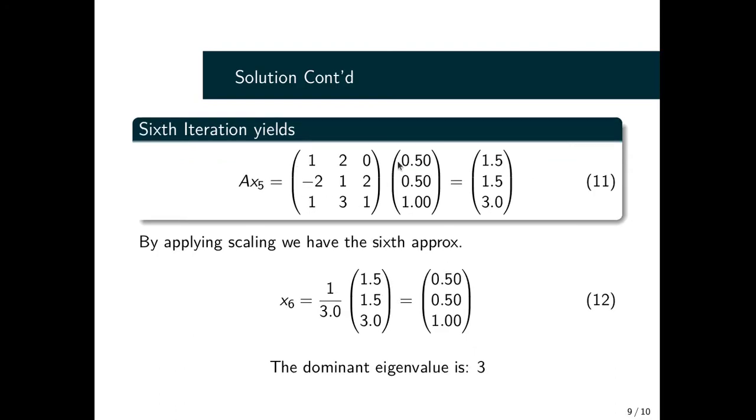We do the multiplication again, which gives rise to equation 11, and we perform the scaling, which gives equation 12. We can see when we consider our x₆ and x₅, they're almost the same. When we continue to do our multiplication over and over, we will keep getting something close to this. When you do the scaling, we'll still get back this same vector.